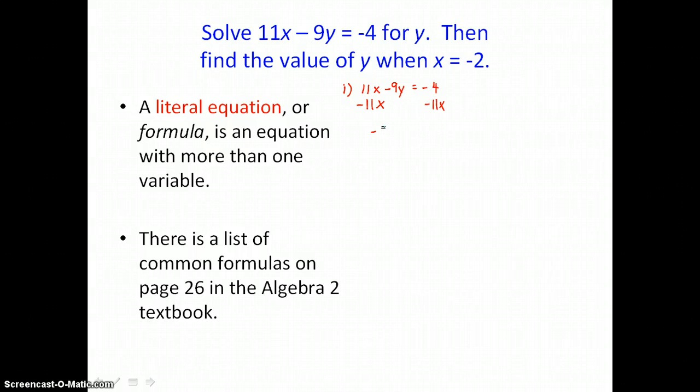So we're left with negative 9y on the left. And on the right, we have an x term, negative 11x, and a number, negative 4. They're not like terms, so we can't combine them.